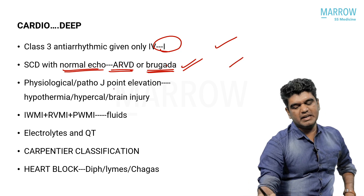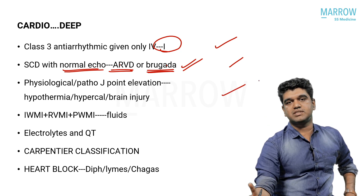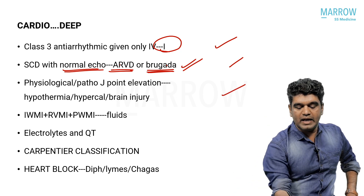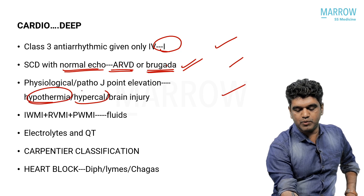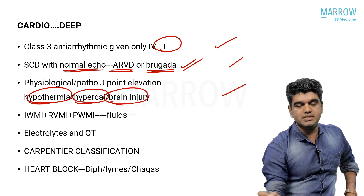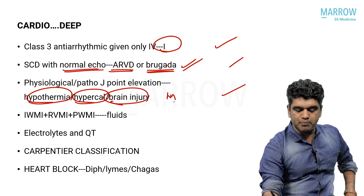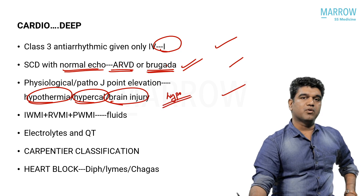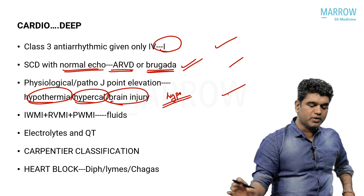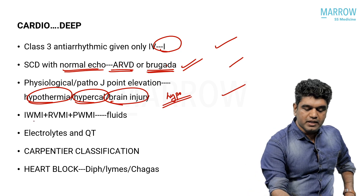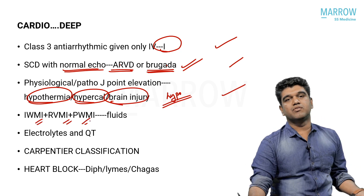Physiological versus pathological J-point elevation is something you can answer only if you've seen a cardiologist's video — a medicine-level video will not help. Pathological J-point elevation can be seen with hypothermia, hypercalcemia, and brain injury. The most important cause they asked about is hypothermia. These are very important points, and without cardiologist help you cannot answer these questions.